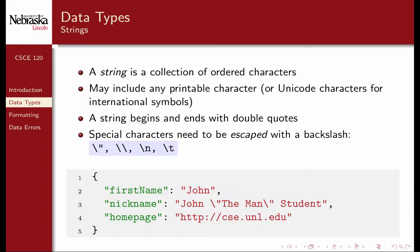A string is a collection of ordered characters. It may include any printable character, or Unicode characters, which are used to represent international symbols such as Chinese, Japanese, or Korean fonts. A string begins and ends with double quotes. Special characters need to be escaped with a backslash. For example, if you wanted to include a double quote inside a string, you would need to include backslash double quote. If you wanted to include a backslash, you would need to put two backslashes. Backslash n and backslash t represent a newline character and a tab character, respectively.